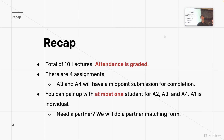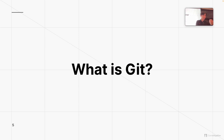To recap from last lecture: there are a total of 10 lectures for Swift/iOS-related content, attendance is graded, and there are four assignments total. A3 and A4 will have a midpoint submission. For the last three assignments — A2, A3, and A4 — you can pair up with at most one person. We'll do a partner matching form if you don't have a partner; I'll make an announcement on the discussion.